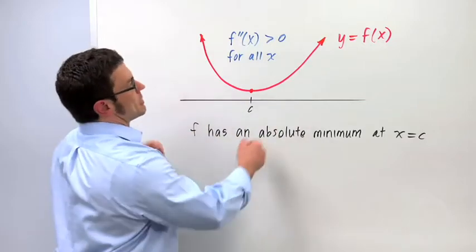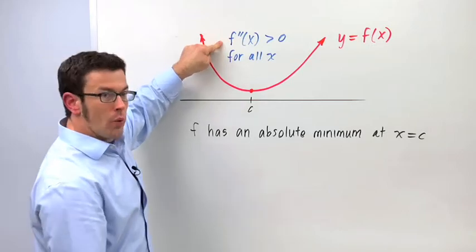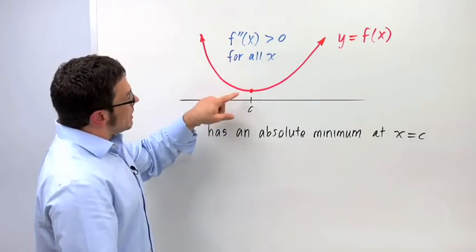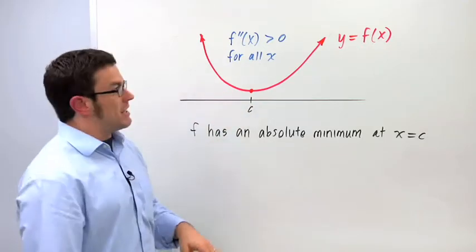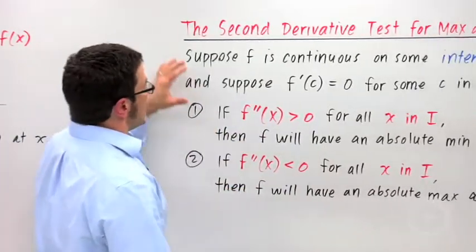Suppose you have a function y equals f of x, and that function has a second derivative which is always positive everywhere on its domain. Well if it has a critical point, then that critical point will be an absolute minimum. It's pretty much guaranteed. So that tells us how the second derivative test basically works.